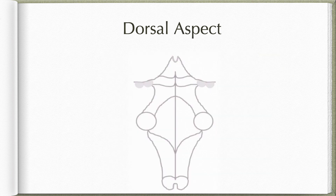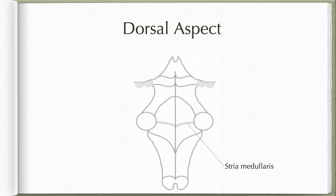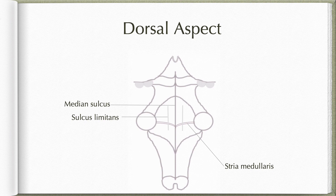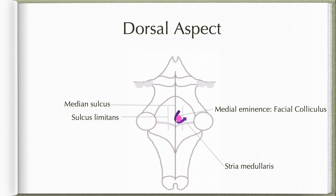Let us now see the features on the dorsal surface of the pons. The dorsal surface is triangular, contributing to the upper half of the diamond-shaped rhomboid fossa or the floor of the fourth ventricle. Transversely running fibers of the stria medullaris separate the pons from the medulla below. There is a median sulcus which divides the area into right and left halves. On either side of the median sulcus there is a faint sulcus limitans, which divides each half into a medial eminence medially and a vestibular area laterally. In the case of the pons, the medial eminence is represented by the facial colliculus, which is an elevation caused by the facial nerve fibers winding around the abducens nucleus.